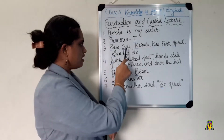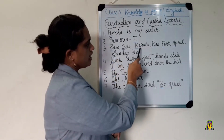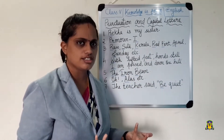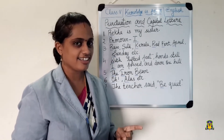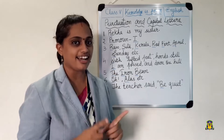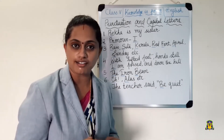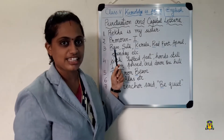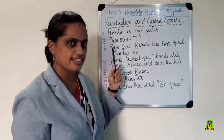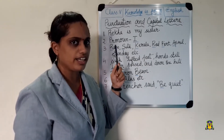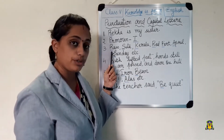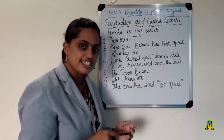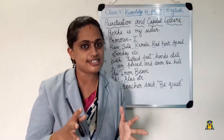The third instance: see these words — Ram, Sita, Kerala, Redford, April, Sunday. All these are proper nouns. Whenever you are writing a proper noun, that proper noun should start with a capital letter. It is an easy way to identify a proper noun. When we learned about proper nouns, we studied this rule — proper nouns will be starting with a capital letter. That is the third instance where we use capital letters.